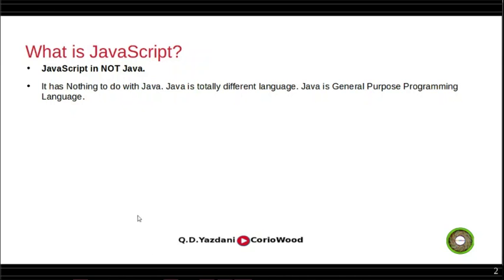Unlike C or C++, JavaScript cannot manipulate memory bits or release memory references — it's not a low-level language. With Java you can do what C++ does: release memory, manipulate bits and bytes. Java competes with C++, C, and C#. You can even make games with Java. With JavaScript, none of that is possible — think of Java as a huge mountain and JavaScript as a small hill.